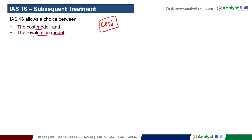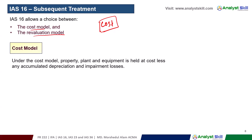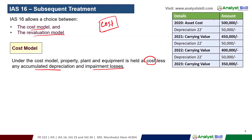We can follow the revaluation model. What do we do to follow it? Under the cost model, we book the asset on the balance sheet, then account for accumulated depreciation minus impairment. Under the revaluation model, we revalue our assets to market value. We will talk about subsequent costs and the asset capitalization process.